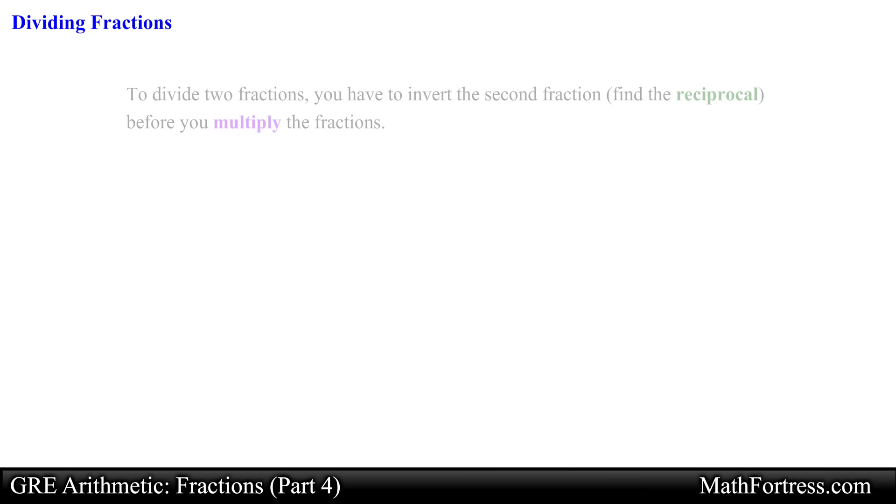Dividing fractions is just like multiplying fractions with one crucial difference: you have to turn the second fraction upside down, that is put its denominator over its numerator before you multiply. In essence you invert the second fraction, this is also called finding its reciprocal. Once you invert or find the reciprocal of the second fraction you go ahead and multiply the first fraction by the inverted fraction.